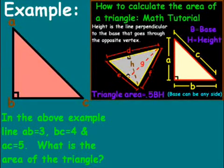First, the easy one. In the above example, line AB is 3, line BC is 4, and line AC equals 5. What is the area of the triangle?